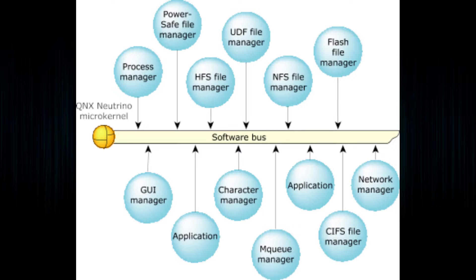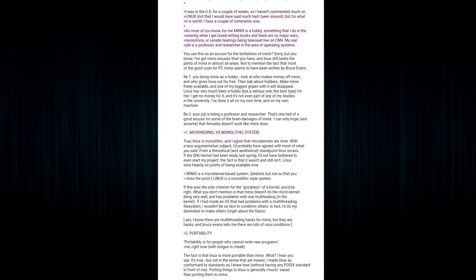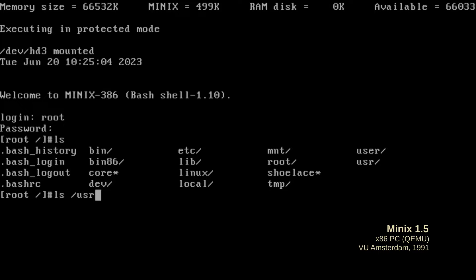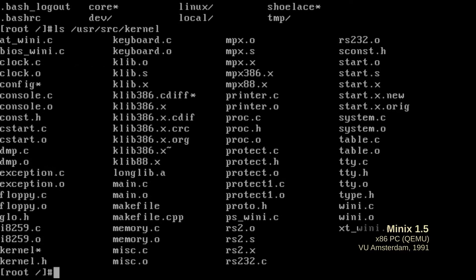Micro-kernel OSs have been around in some form since the late 60s. If implemented properly, they can have significant advantages over conventional OSs. However, they've been surrounded by controversy, including a famous debate in the early 90s on Usenet between Linus Torvalds, founder of Linux, and Andrew Tanenbaum, founder of the Minix and Amoeba micro-kernel OSs. This is largely due to several sub-optimal implementations that significantly over-promised and under-delivered.